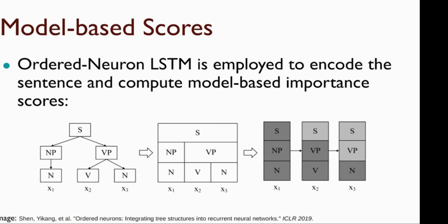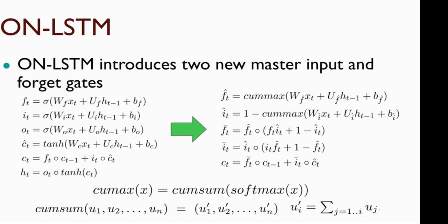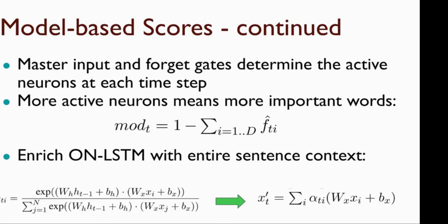To achieve this, ON-LSTM proposes to use two master input and forget gates, which are very similar to the original forget and input gates in the original LSTM. The main difference is the activation function, which is cumax. Cumax is the cumulative sum over the softmax of the input, and it will ideally divide the given input into two segments of zeros and ones. Using that, we can identify which neurons should be activated and which neurons should not be activated at different timestamps. Using this information, we can compute model-based importance scores for each word. More specifically, we compute the sum of the values in the master forget gates and subtract that from one to estimate the model-based importance scores for each word.